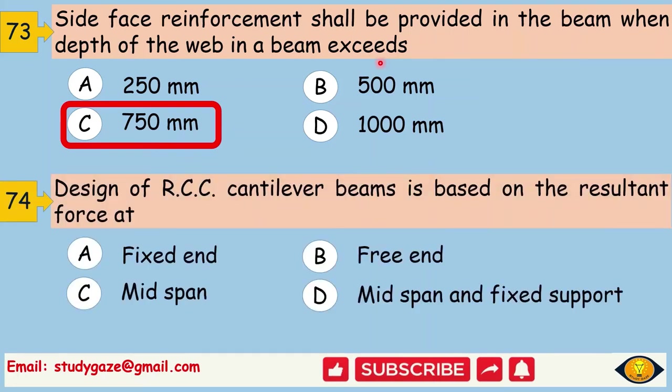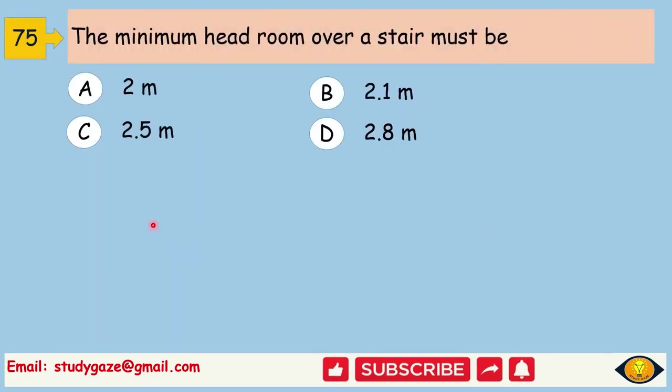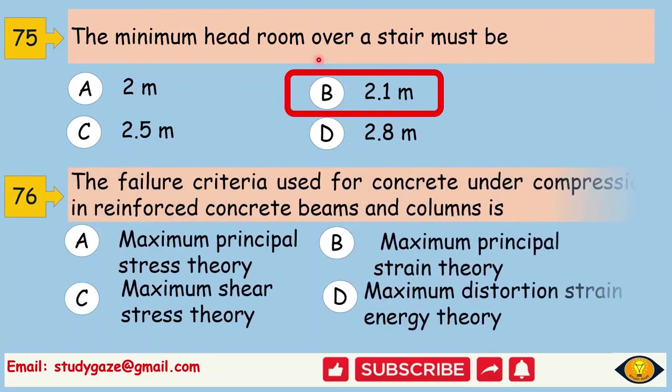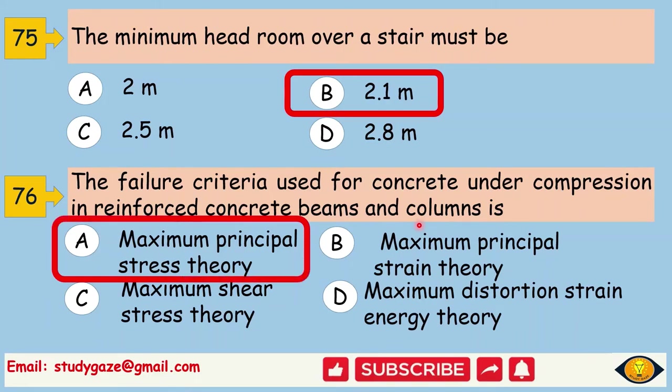Design of RCC cantilever beams is based on the resultant force at. Answer is fixed end. The minimum headroom over a stair must be. Answer is 2.1 m. The failure criteria used for concrete under compression in reinforced concrete beams and columns is maximum principal stress theory.